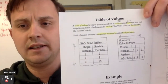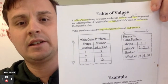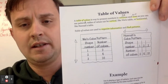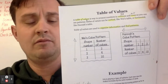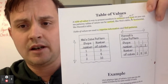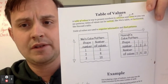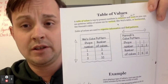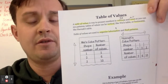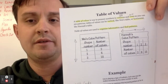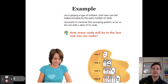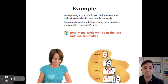Here's what highlighted information may look like. I highlighted 'table of values' because that's what we're defining. I drew a little column, noted that rows go left and right, highlighted vertical and horizontal, and highlighted that tables are used to organize information and to help you find patterns. Next we have an example.